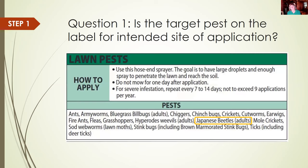Question one: is the target pest on the label for the intended site of application? If you have Japanese beetles chomping on your rhubarb and bean leaves in the garden, you might decide you need a pesticide to help control that. This label, as you can see at the bottom, is labeled for Japanese beetle adults, but only in lawns — it's not labeled for use on vegetables. You can't use it. Pesticides meant to be used on food plants are held to a higher standard, so the food might not be safe to eat if you use this pesticide.